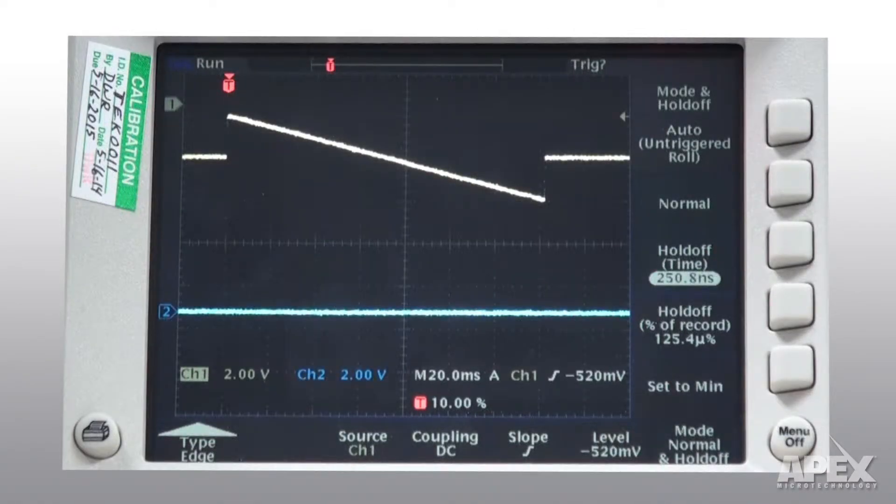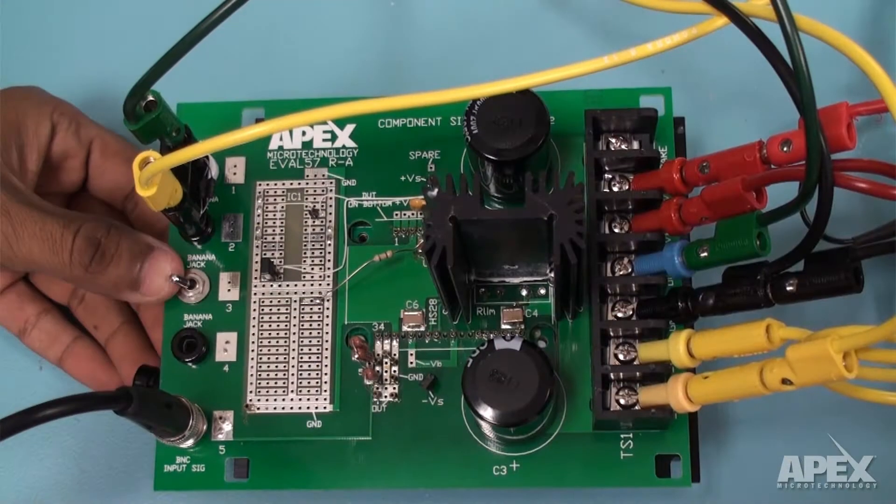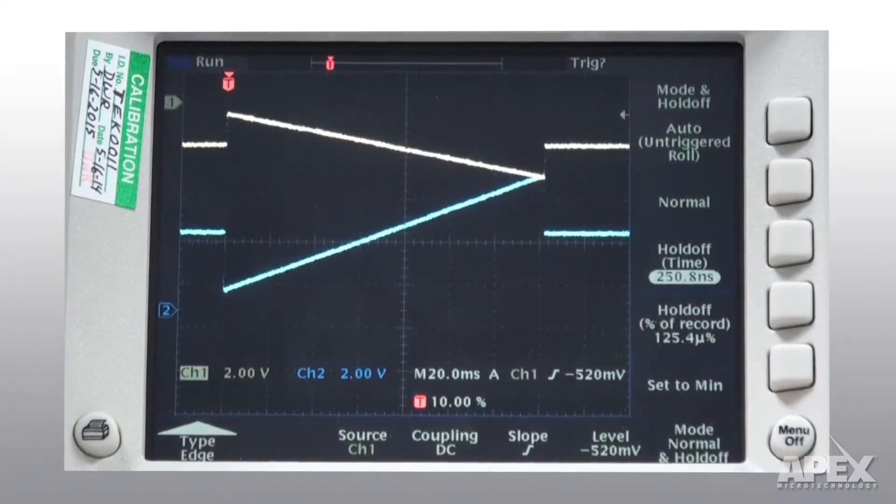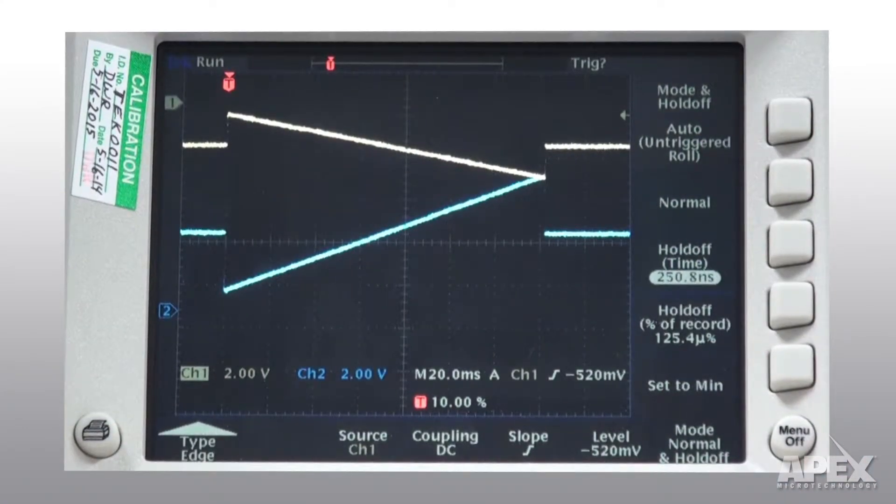To restart the amplifier, there is no need to reduce the input voltage. Simply reset the amplifier. Over-current protection will still kick in should the output voltage remain high. This can be avoided by reducing the input voltage or increasing the load.